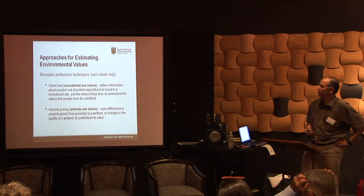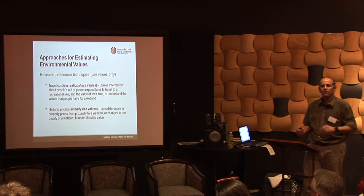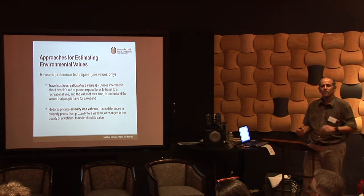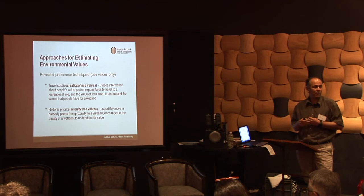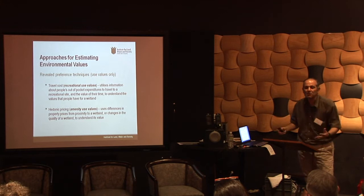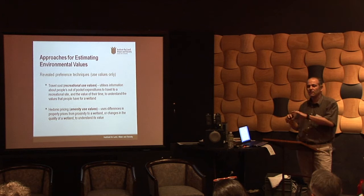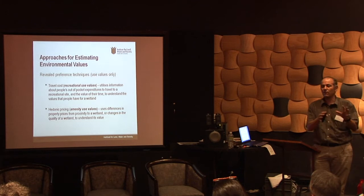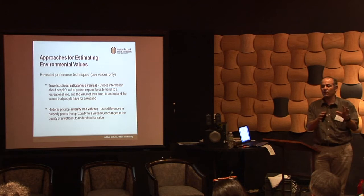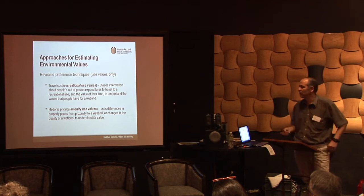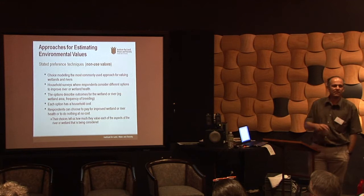Then there are revealed preference techniques, again for estimating use values. One is the travel cost approach, often used for estimating recreation value. We can figure out recreation value by how much people are prepared to spend getting to a place — their travel and time costs. As cost goes up, people tend to visit less, so as you go further away you get less visitation, allowing us to map out a demand curve. Hedonic pricing is another approach: you look at differences in property prices between environmentally rich and environmentally poor areas. As quality goes down, that affects house prices or farm property prices, and that tells us a lot about value.